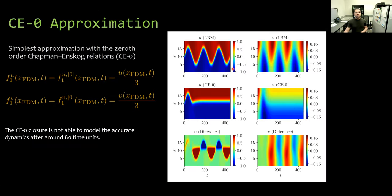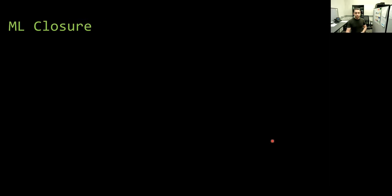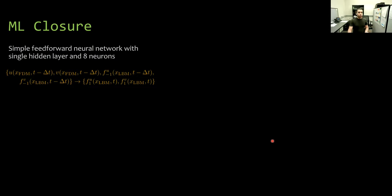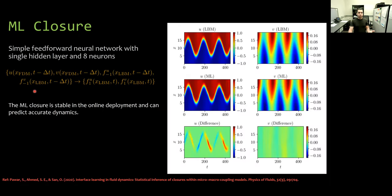Here, we consider solving the whole domain with LBM as being the ground truth at this top row. The middle here is using the zero-order approximation. As we see here, after some time, the error becomes really large. Now we can introduce a machine learning closure at the interface to provide better approximation of F1U and F1V. We use a very simple feedforward neural network architecture with a single hidden layer with eight neurons to learn this mapping from U and V at the last FDM point and F minus 1 at the first LBM point to obtain F plus 1 at the same point. We can see this coupling with ML closure or interface learning is accurate and stable with time.